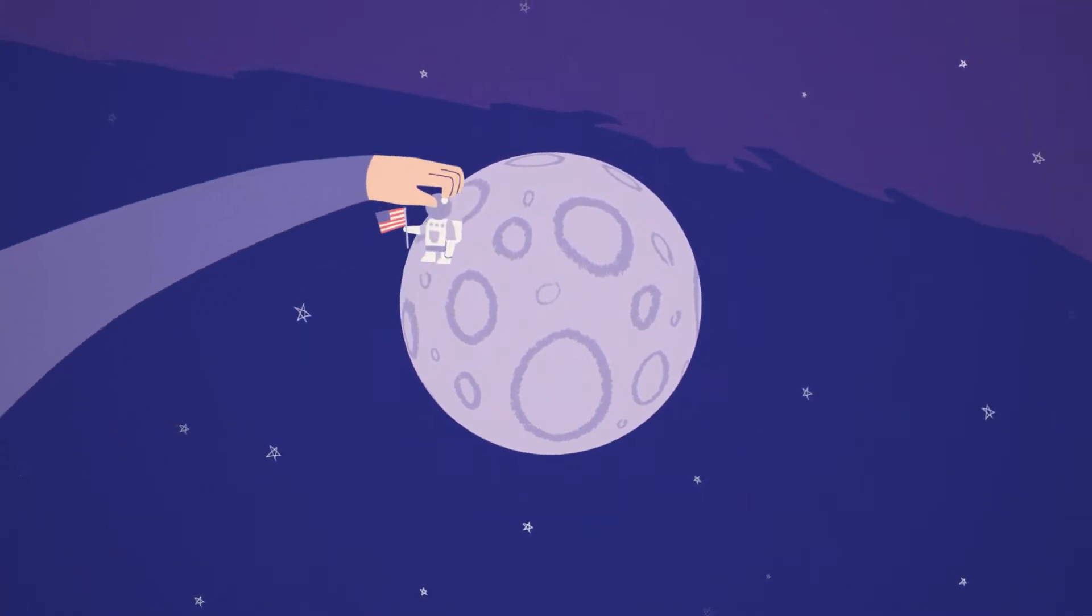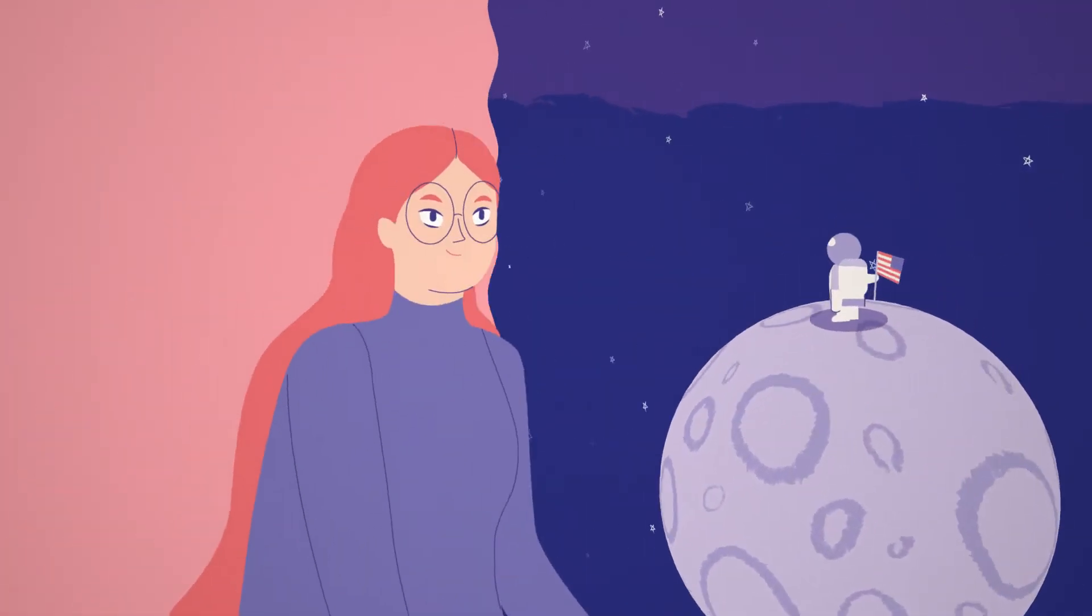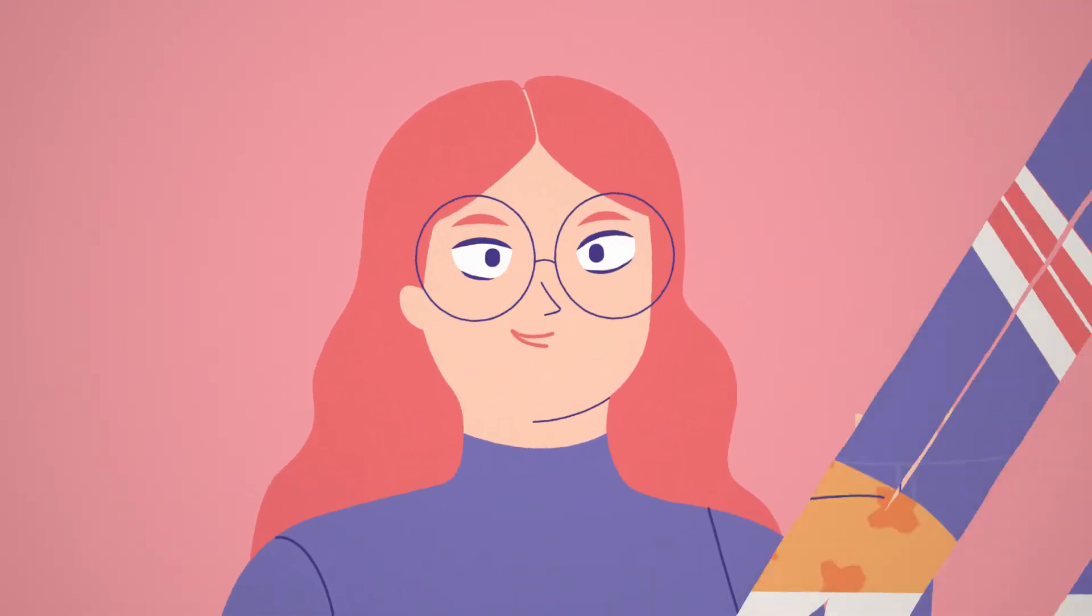Once upon a time, there was a girl who put a man on the moon. Her name was Margaret, and she would become a famous computer programmer.